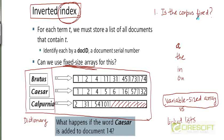On the other hand, if the corpus is not fixed — if it is dynamically changing and there is a need for inserting, modifying, or deleting entries from the postings lists — for example if the word 'Caesar' is added to document 14, we would need to add 14 to its postings list. If the postings list is implemented as an array, you would need to shift all elements to make space and likely recreate the array entirely. So if the corpus is dynamically changing, linked lists are particularly well suited since you can insert, delete, and modify elements dynamically.